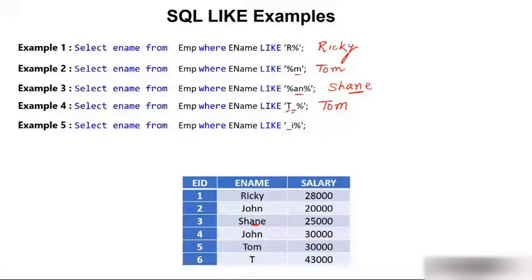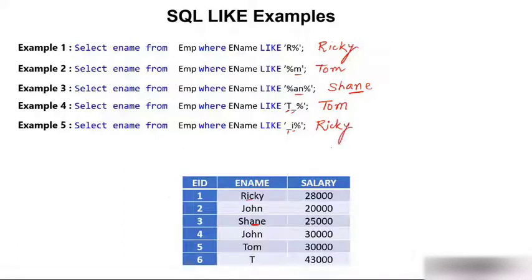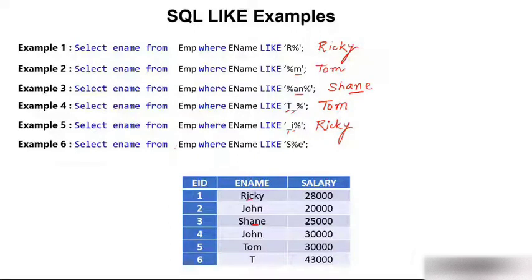For WHERE ename LIKE '_I%', the second character must be 'I' — looking at the names, Ricky has 'I' as its second character, so the answer is Ricky. For WHERE ename LIKE 'S%E', we look for a name starting with 'S' and ending with 'E' — the answer is Shane.